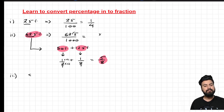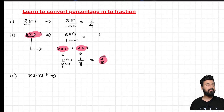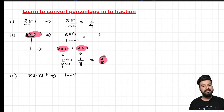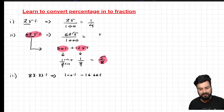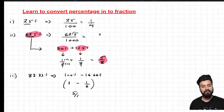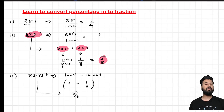Another example: 83.33%. This is close to 100%, and 100% minus 83.33% = 16.66%. Since 100% = 1 and 16.66% = 1/6, we compute 1 − 1/6 = 5/6. So 83.33% is the same as calculating 5/6 of a number.